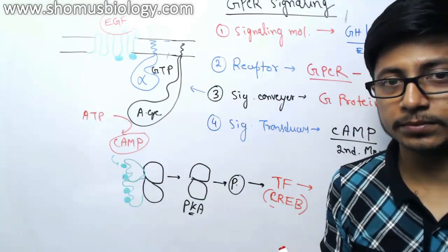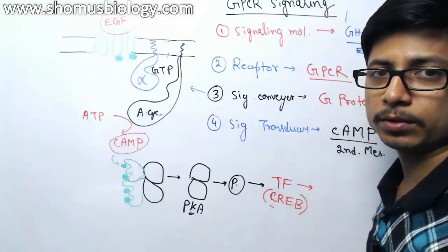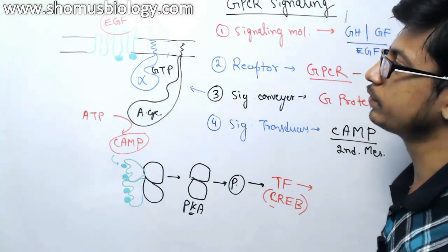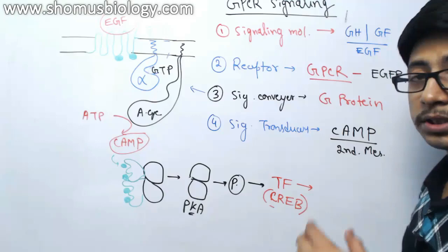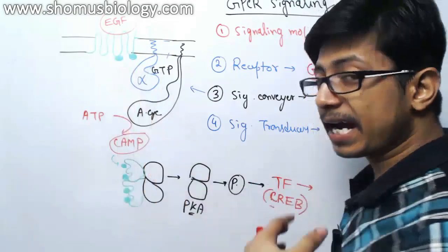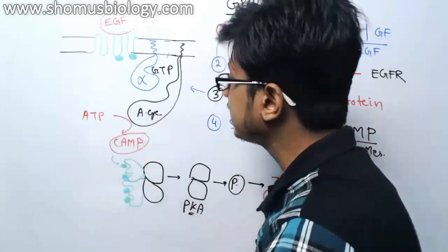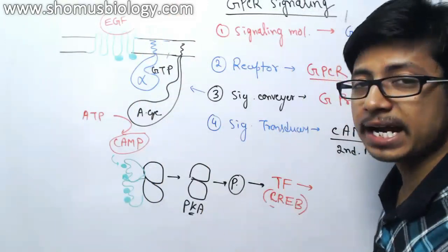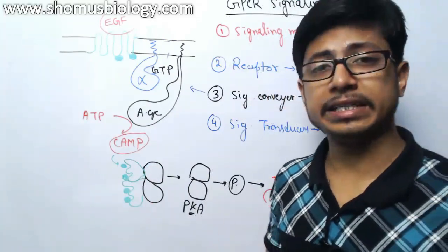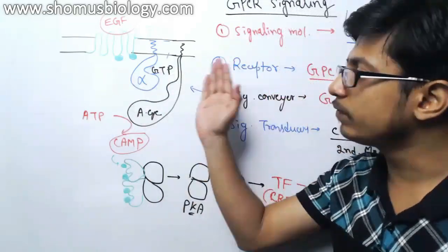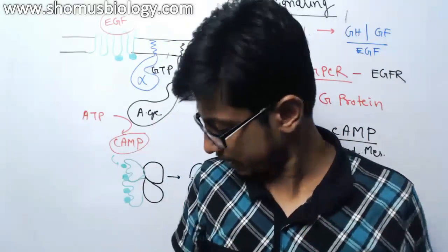There is another way GPCR signaling can work — not by activating cyclic AMP. In this pathway, the second messenger is different: it is IP3. The same events occur at the beginning — GPCR interacts with a growth factor, GPCR is modified, and G protein gets activated by substituting GDP with GTP — but instead of activating adenylyl cyclase, the activated G protein interacts with a membrane-bound component known as PIP2, phosphatidylinositol bisphosphate.